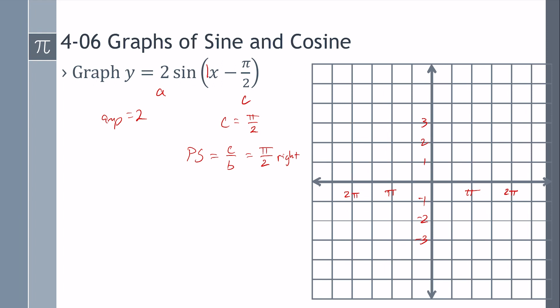All right. So sine starts at 0, 0. However, I am shifted pi over 2 to the right. Well, pi over 2 is just 1 square, so I'm going 1 square to the right.